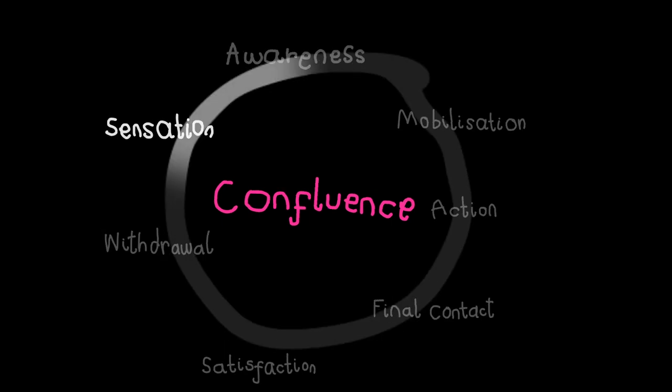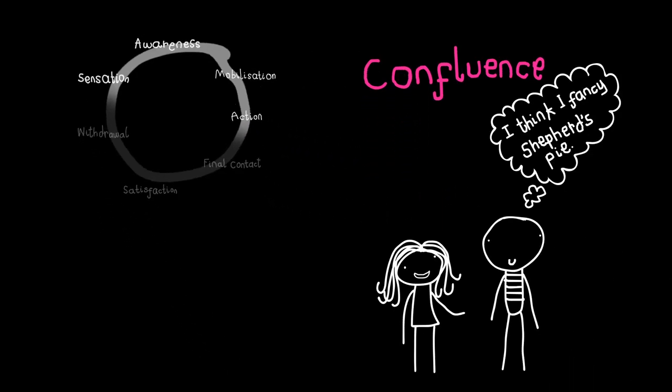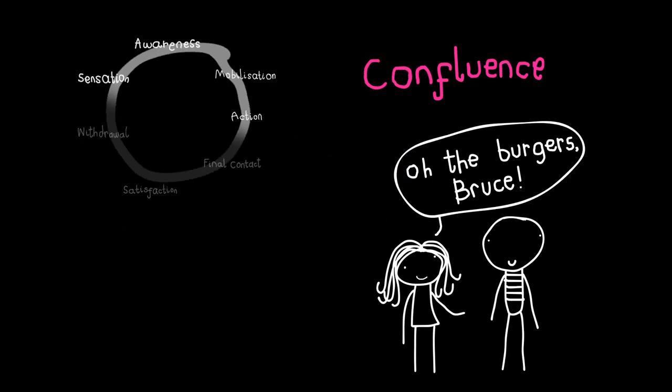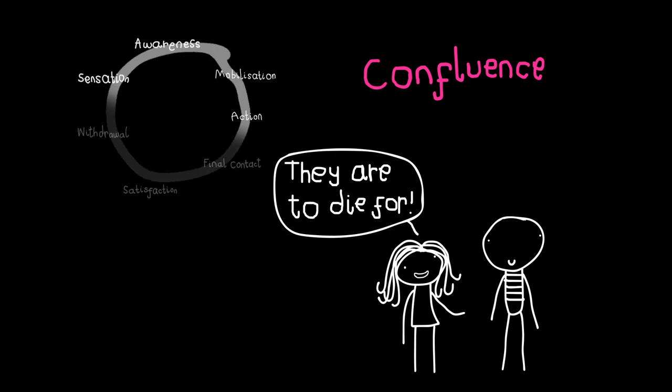Confluence is a block that occurs when we go with someone else's need rather than our own. For example, Bruce really fancies a shepherd's pie but Shirley says how wonderful the burgers are, and even though Bruce still prefers the idea of a shepherd's pie, he orders a burger.